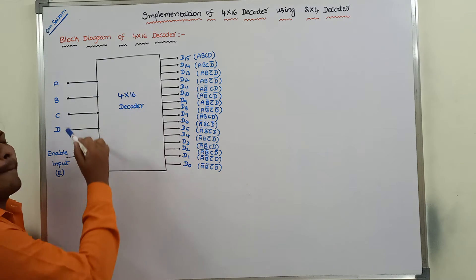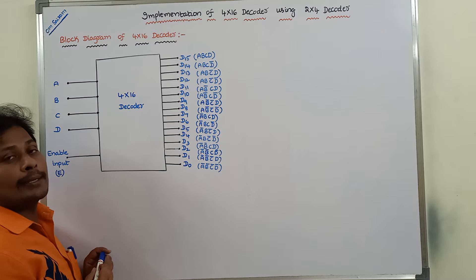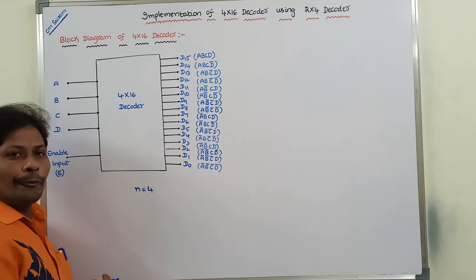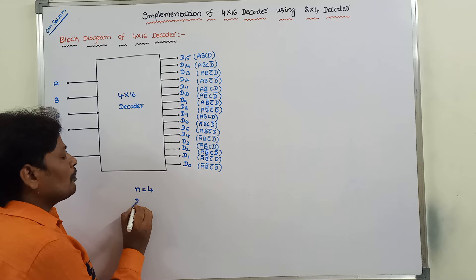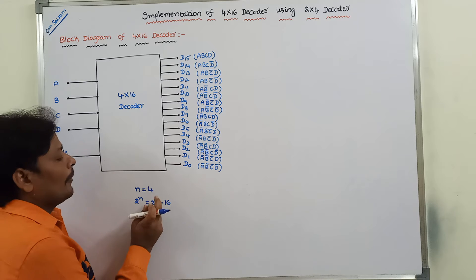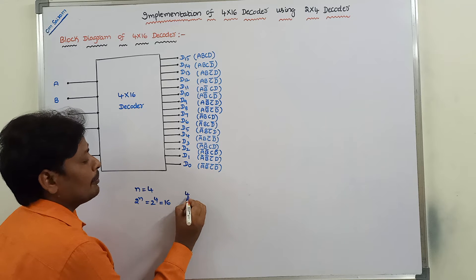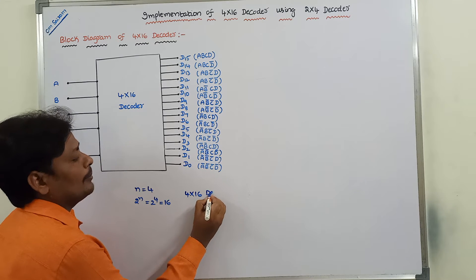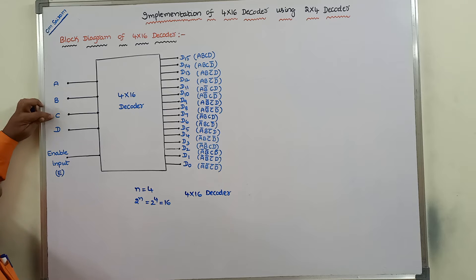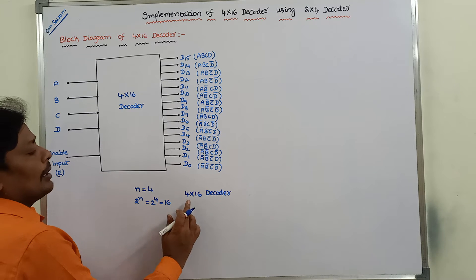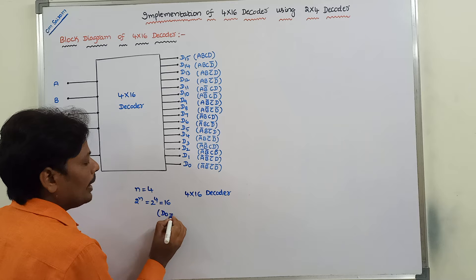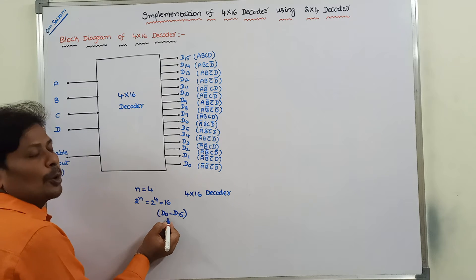This is the block diagram of a 4x16 decoder. It contains number of inputs n equal to 4. It can produce 2 power n number of outputs, that is 2 power 4, which equals 16 outputs. With 4 inputs and 16 outputs, it becomes a 4x16 decoder. Here the 4 inputs are A, B, C and D, and the 16 outputs are D0 to D15.